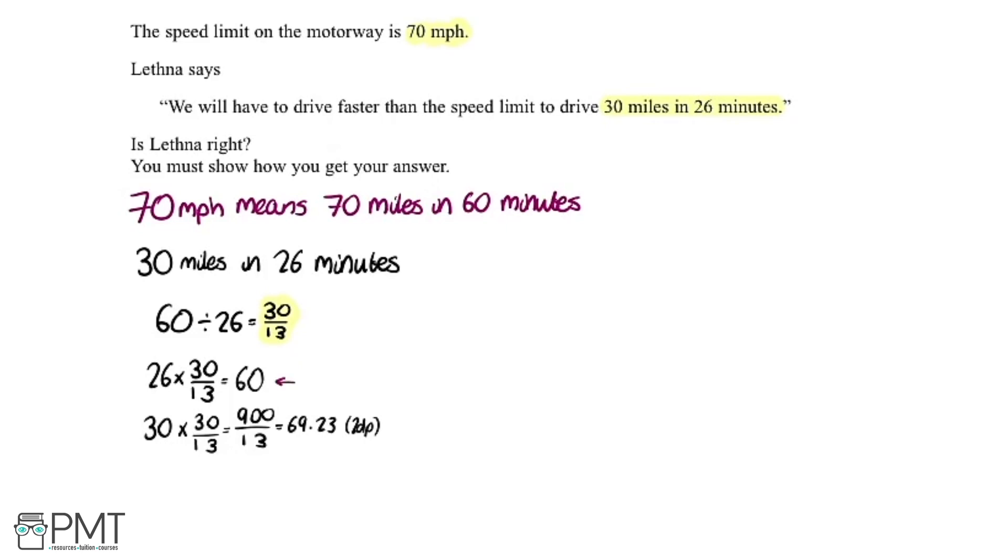So if we think about this, this is our minutes so it's in 60 minutes and these are our miles. So writing this out here in a sentence you can go 69.23 miles in 60 minutes which is 69.23 miles per hour.